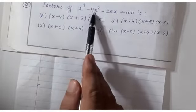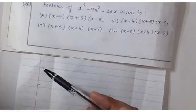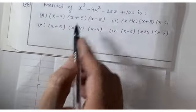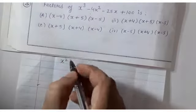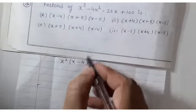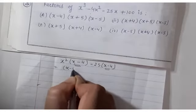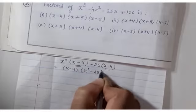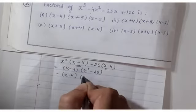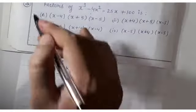Question number 26: factorize x³ − 4x² − 25x + 100. Take x² common from first two terms: x²(x − 4). Take −25 common from last two terms: −25(x − 4). So (x − 4)(x² − 25) = (x − 4)(x + 5)(x − 5). Answer is A.